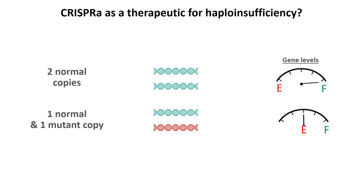Going back to the model, we still have one existing copy that's perfectly fine — it's just giving 50% of the mRNA and subsequent protein. What if we could boost that expression up? The idea is to target the existing copy with CRISPRa and force it to generate more RNA, leading to more protein from the existing normal copy, which might rescue the disease. We thought hard about what disease to go after — we wanted something quantitative, something we can measure, where even a small increase in expression might produce a visible phenotype. And so we came up with obesity.